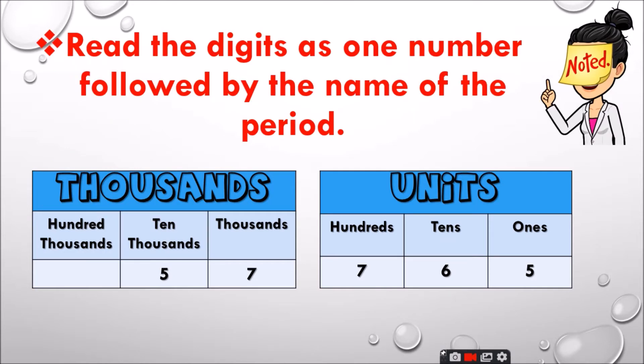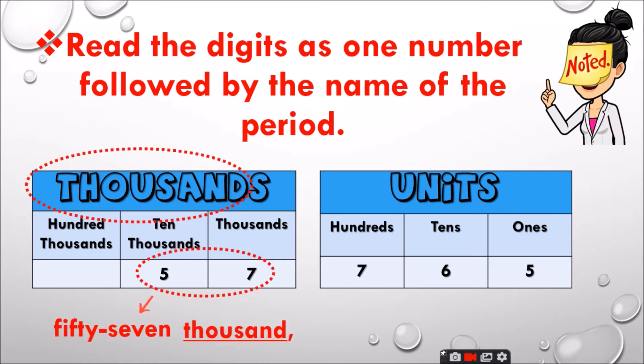Second, read the digits as one number followed by the name of the period. So, in the place value chart, 57 followed by the period thousands, but you need to remove the S. So, it will become 57,000.